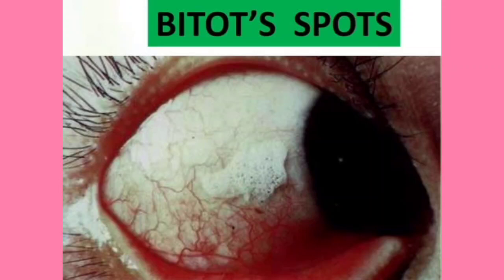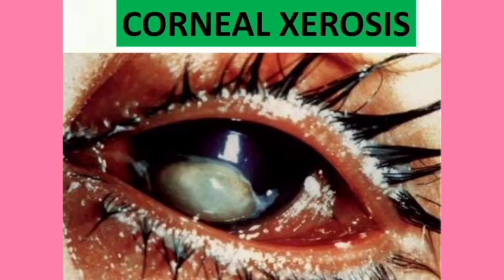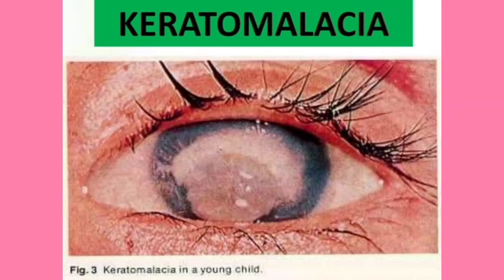Now look at this — this is corneal xerosis. The transparent portion of the eye has dried up. The classification is X2, corneal xerosis. Now this image shows keratomalacia — corneal ulcer or keratomalacia, both in the same group X3. X3A is less than one third corneal involvement; X3B is more than one third.